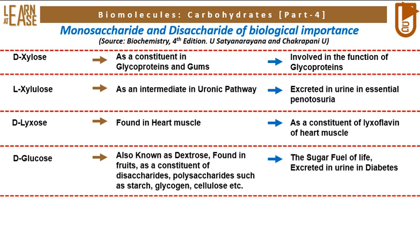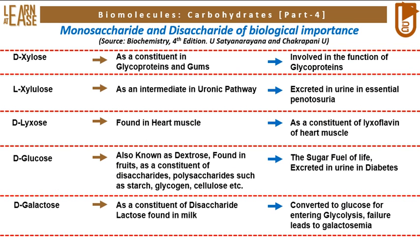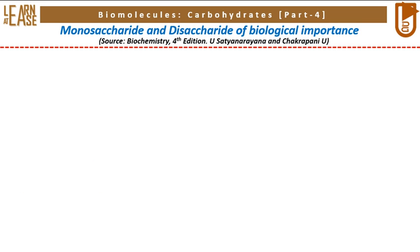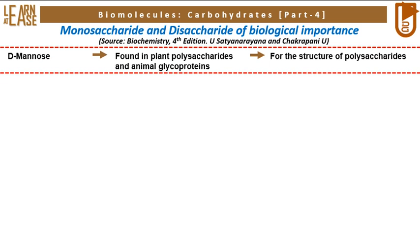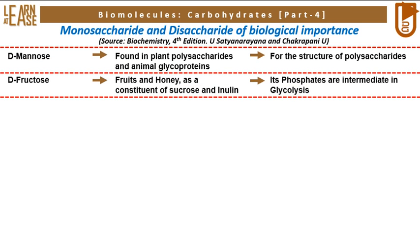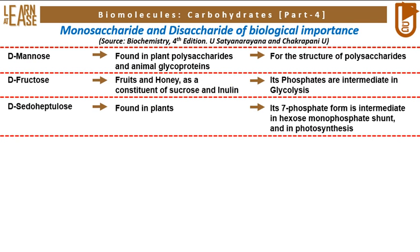D-glucose, also known as dextrose, is found in fruits as a constituent of disaccharides and polysaccharides such as starch, glycogen, and cellulose. It is the sugar fuel of life, used to produce ATP, and is excreted in urine in diabetes. D-galactose is found as a constituent of the disaccharide lactose found in milk; it gets converted to glucose for entering glycolysis, and failure of this conversion leads to galactosemia. D-mannose is found in plant polysaccharides and animal glycoproteins. D-fructose is found in fruits and honey as a constituent of sucrose and inulin, and its phosphates are intermediates in glycolysis. D-sedoheptulose is found in plants and its 7-phosphate form is an intermediate in the hexose monophosphate shunt and in photosynthesis.